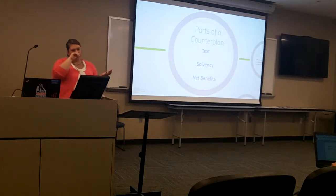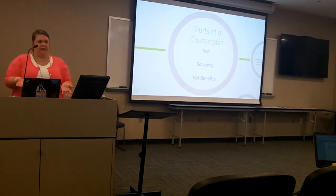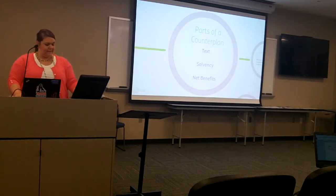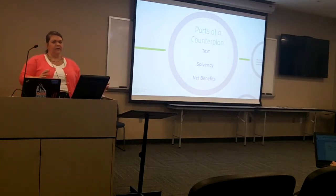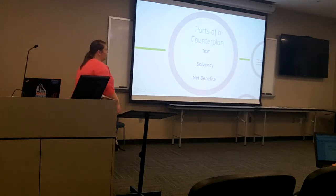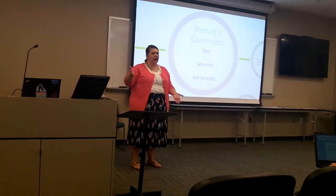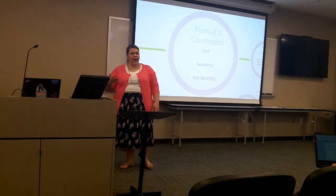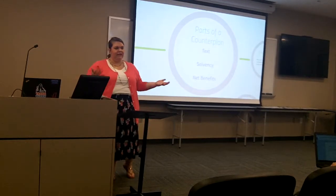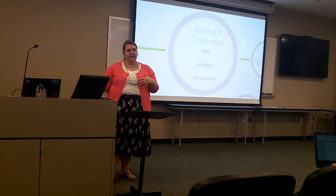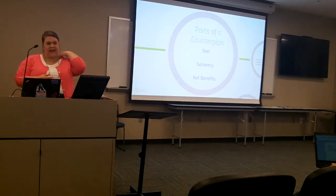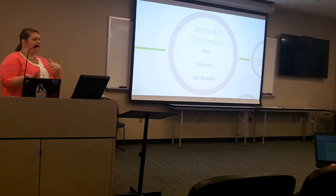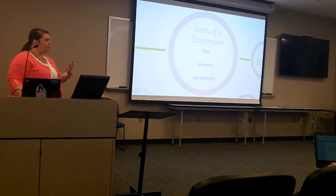The final part is the net benefits to the counter plan. A net benefit is a disadvantage that the counter plan does not link to but the plan does — it's the reason why doing the counter plan is a good idea. For example, federalism is a net benefit to the states counter plan: it links to the plan but not to the states counter plan. Net benefits act as the reason why the judge should prefer the counter plan over the plan.